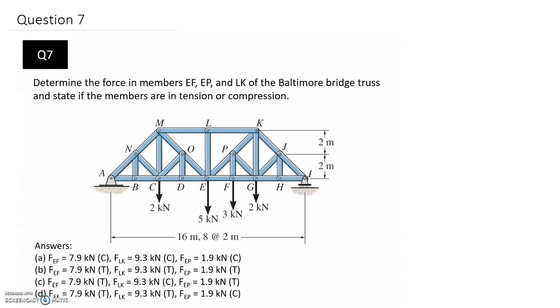We're asked to determine the force in three members: EF, EP and LK of the Baltimore bridge truss, and state whether those members are in tension or compression. If we look at it, the three members that we're asked to find are EF, EP and LK. You can see that those three are all located together near the centre of the truss.